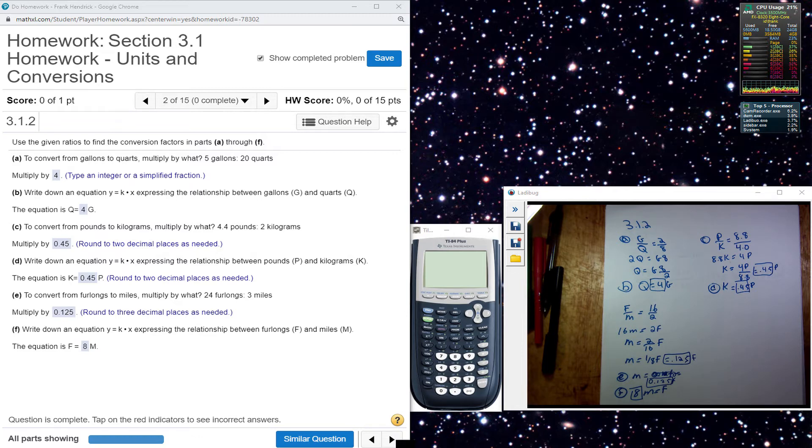In the B part, they ask you to write down the equation. So the equation is going to be Q equal to 4G.